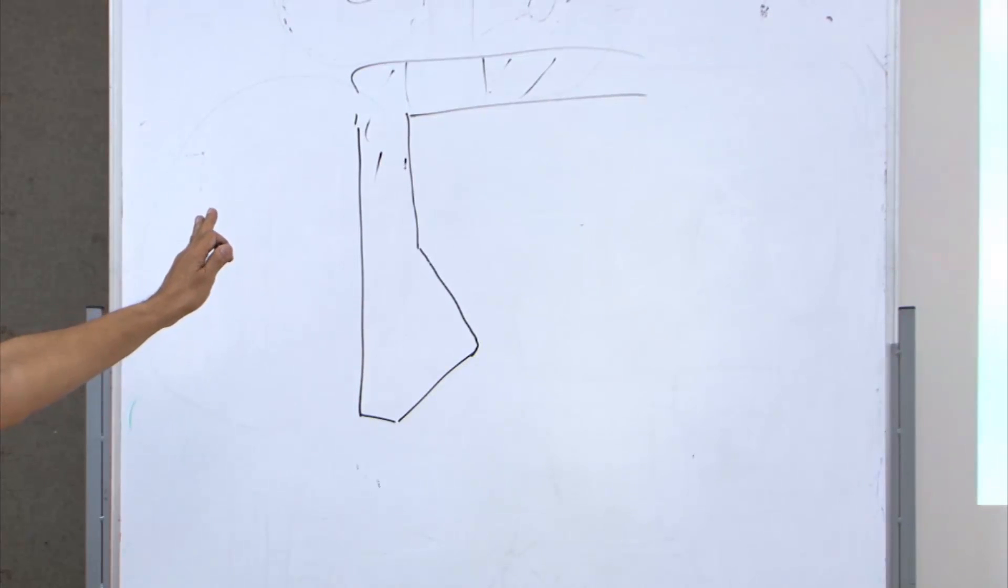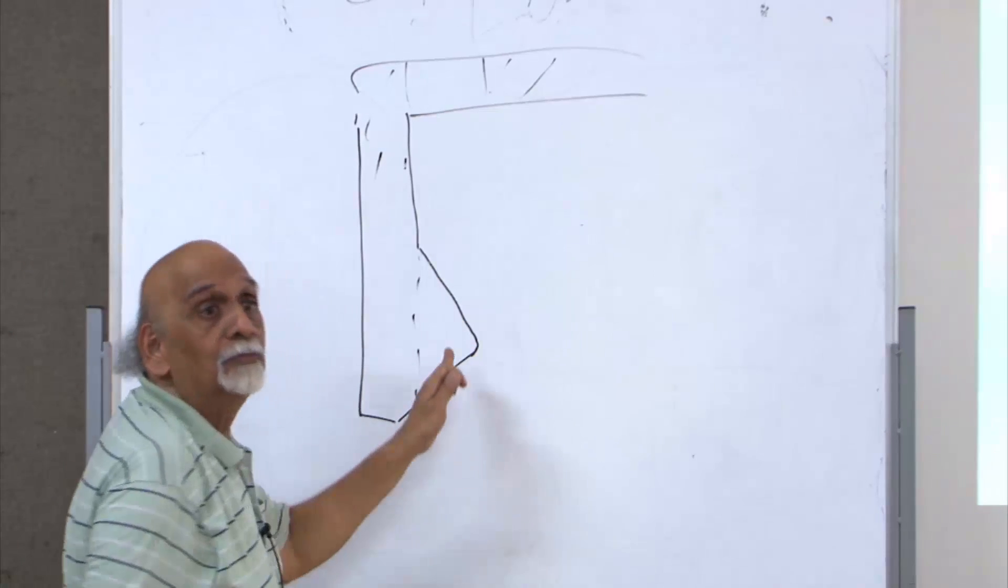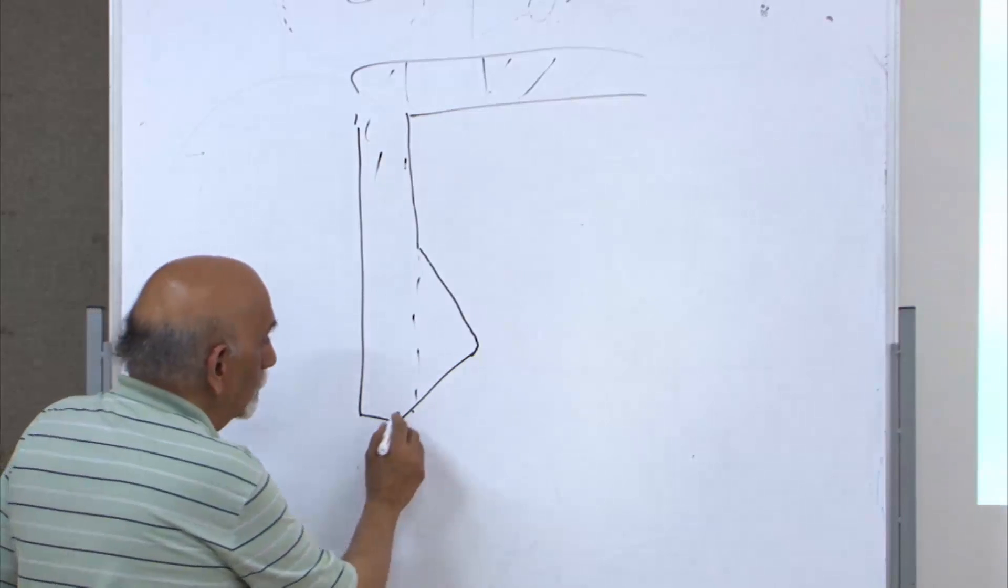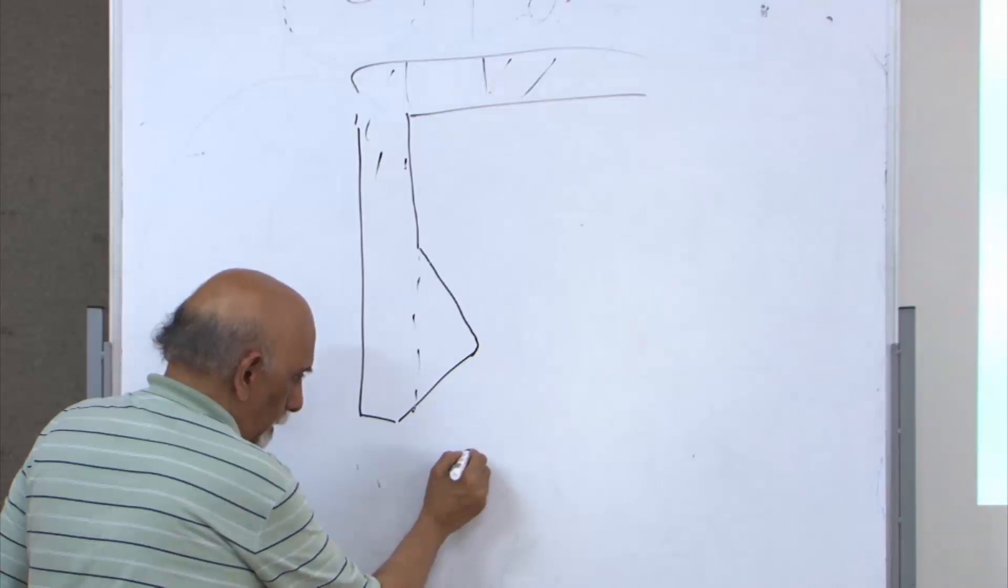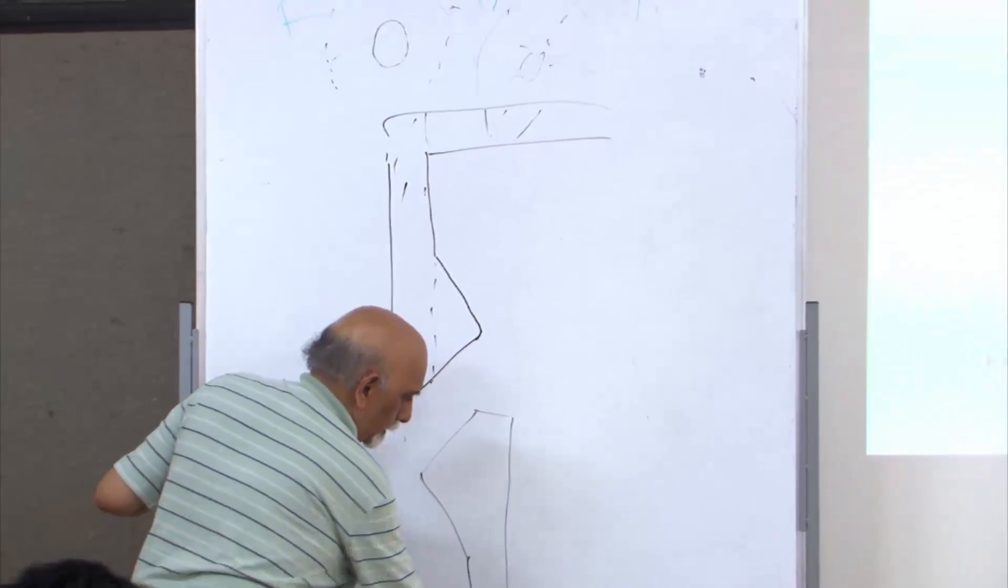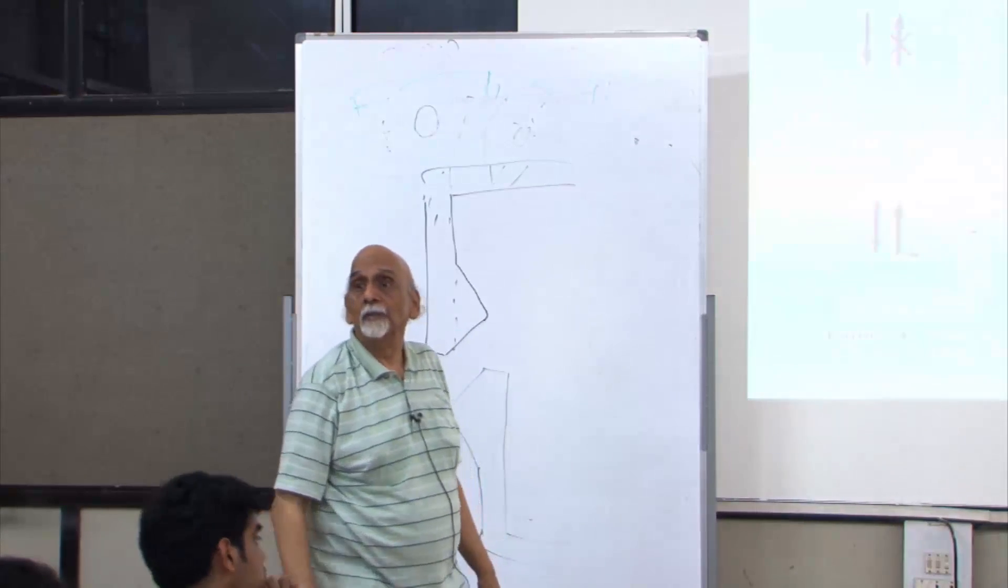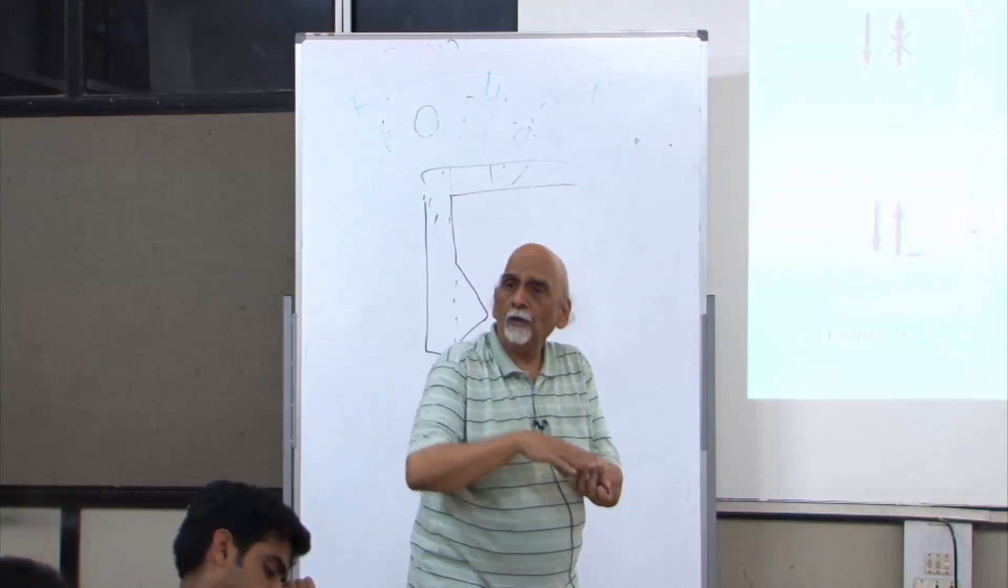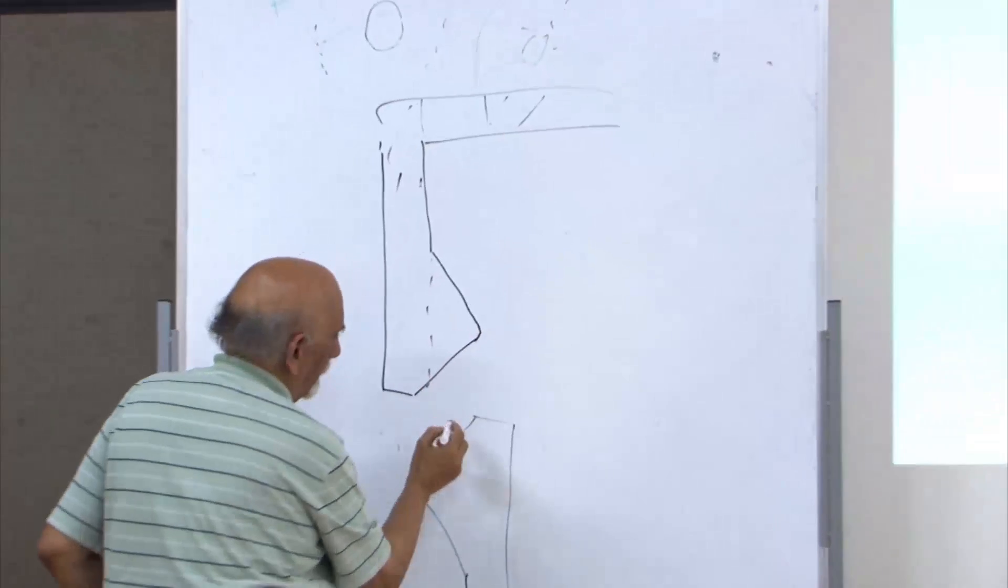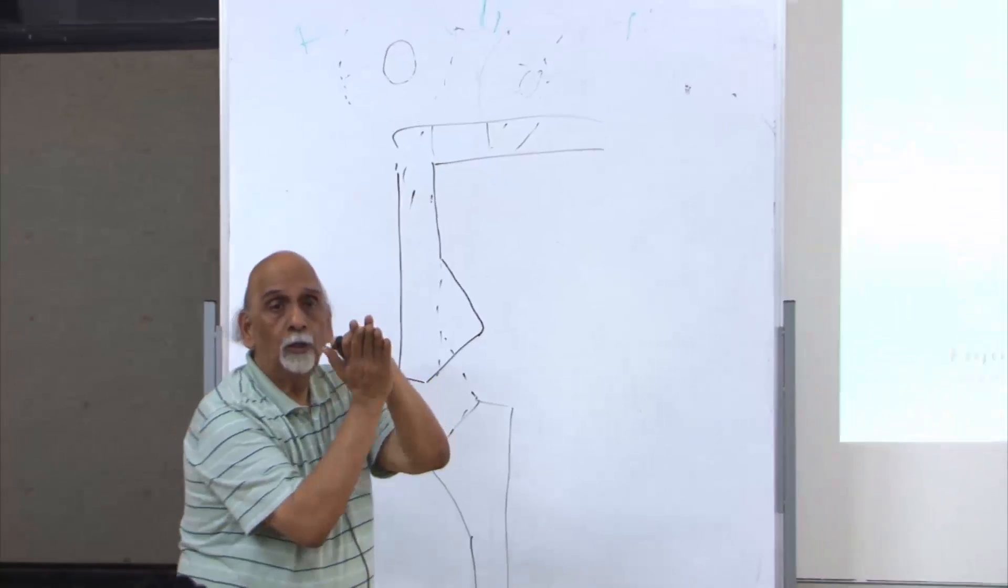When I start pressing it down, this part will come down here. Now two angular surfaces are coming in contact. So what does that mean? The vertical force is there.